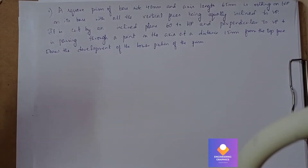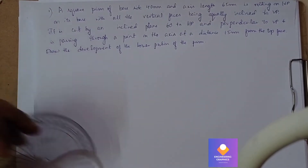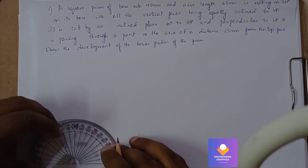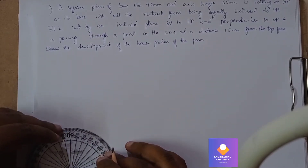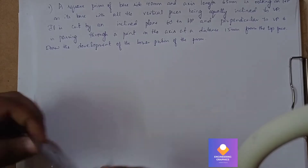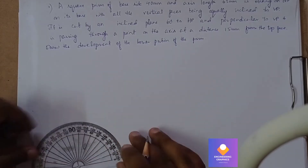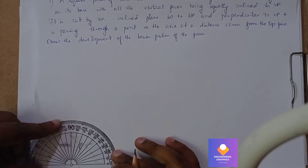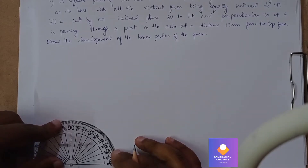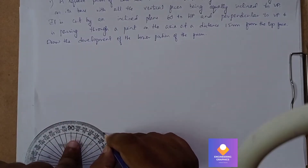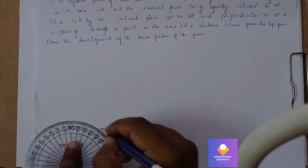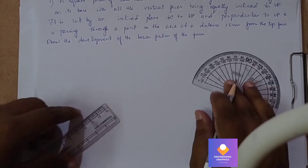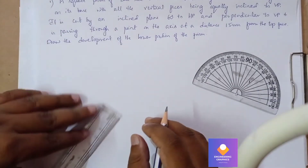We have a square prism problem where we have to construct a square prism of dimension 40mm and axis length 65mm. It is resting on the HP plane on its base with all vertical faces being equally inclined to VP. That means we need to construct the square prism with respect to corner position so that all vertical faces are equally inclined to VP.